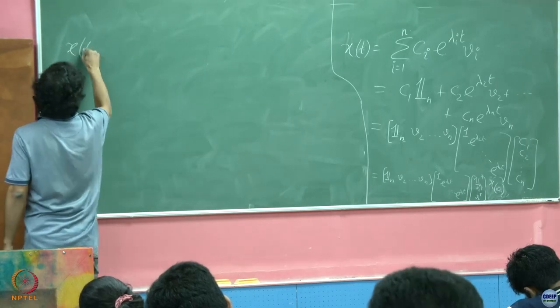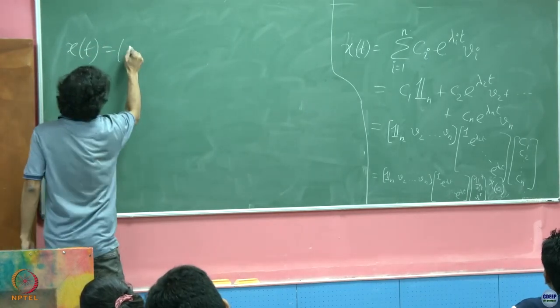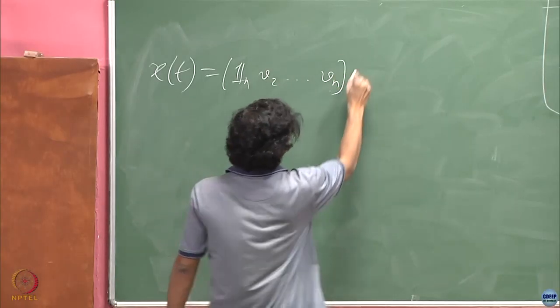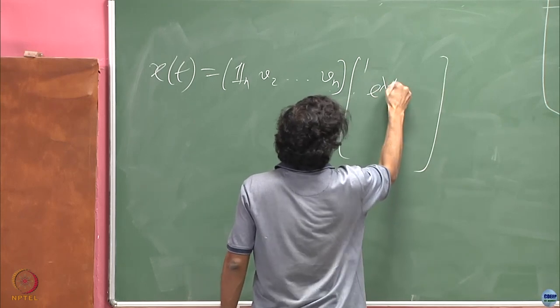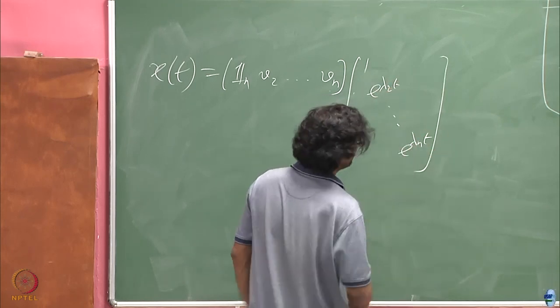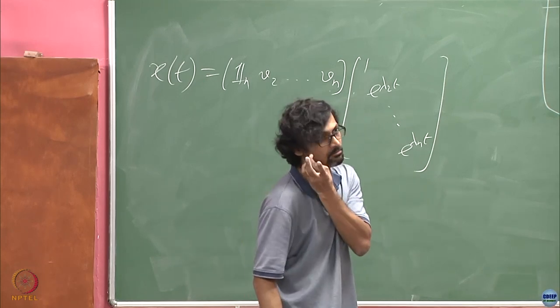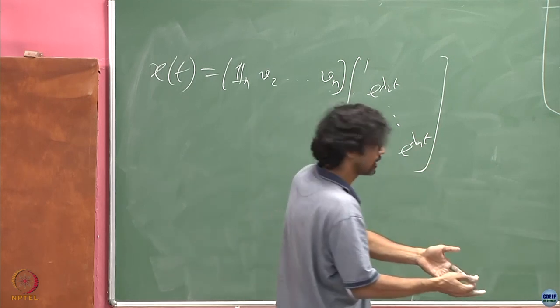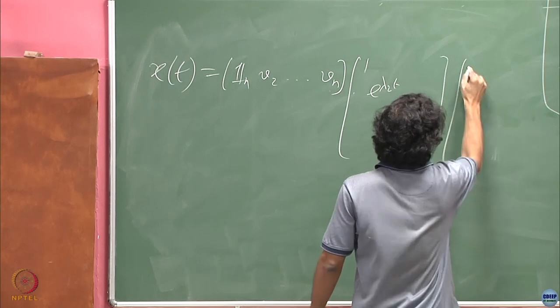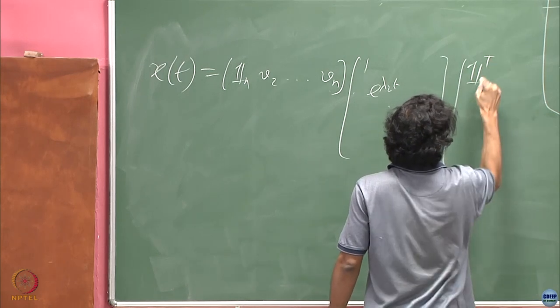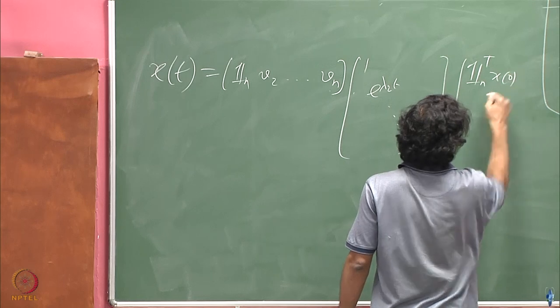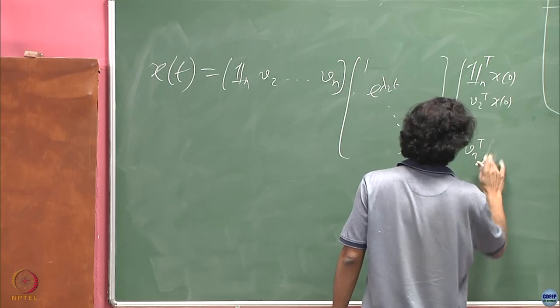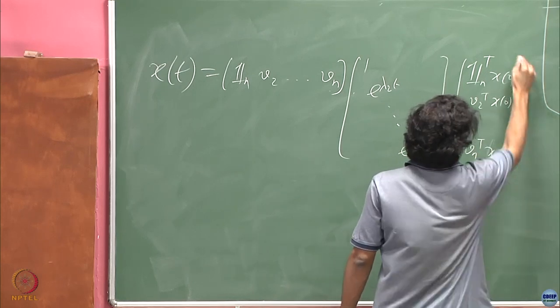So I might as well just write this as [all ones transpose, V_2 transpose, ..., V_n transpose] times X_0. This inverse is just going to be its transpose because it is orthogonal. So this is the special case. Up until this point there was nothing special that I harnessed. Just any matrix comes out to this form and that is why you actually have this case, e^{At}. You diagonalize, this is just the diagonalized form of that.